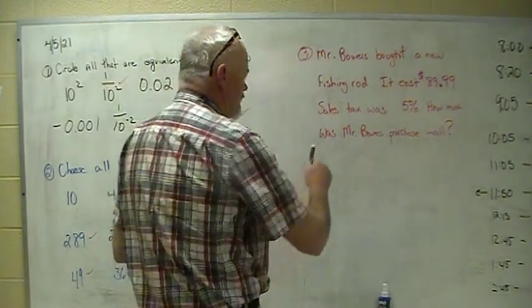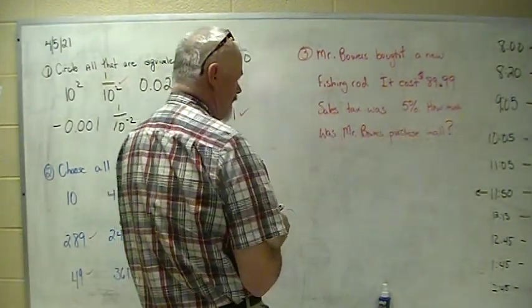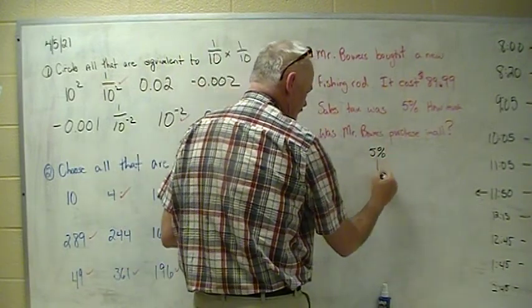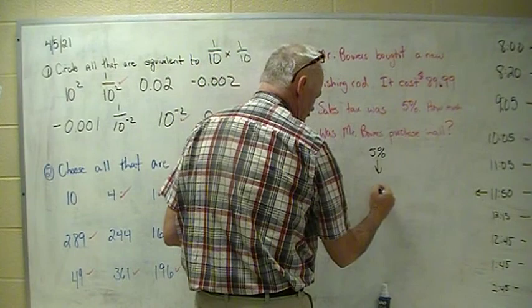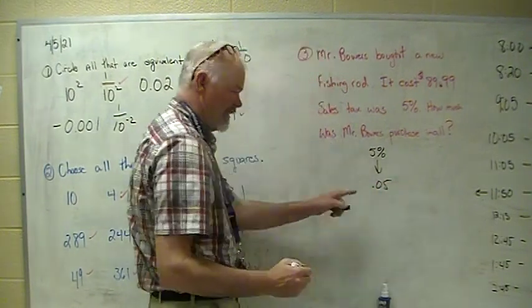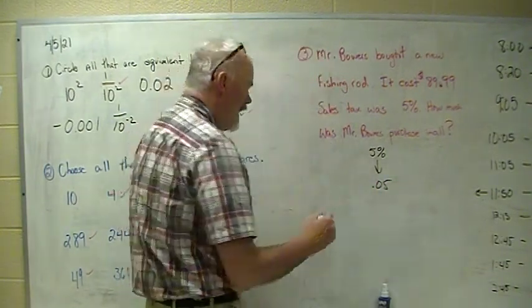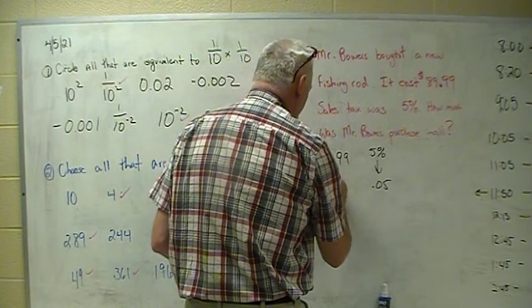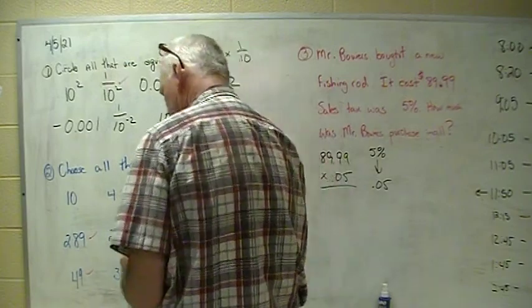Last but not least, I bought a fishing rod for $89.99. Sales tax was 5%. How much was the purchase in all? First thing we do, take our sales tax or percent and change it to a decimal - turns into 0.05 - and then we multiply that times 89.99.